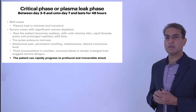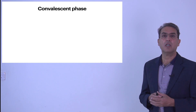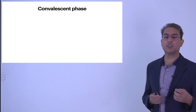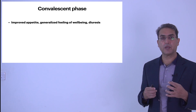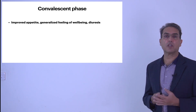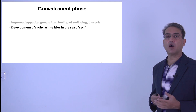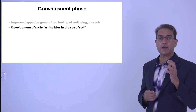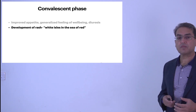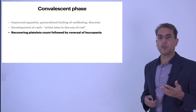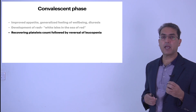After the critical phase, which usually lasts 48 hours, the patient enters the convalescent phase — the recovery from the disease. There is improved appetite, a generalized feeling of well-being, and diuresis as the leaked fluid starts reabsorbing. The circulatory volume fills up, renal perfusion improves, and urine output starts improving. Then there is development of a rash — called 'white isles in a sea of red' — with white patches between areas of erythema. The platelet count and leukopenia also start improving.